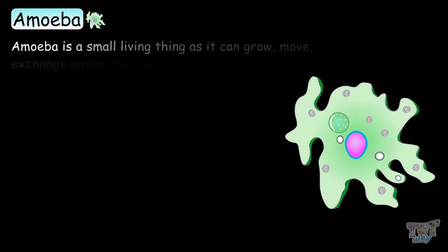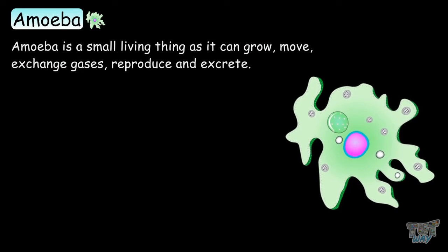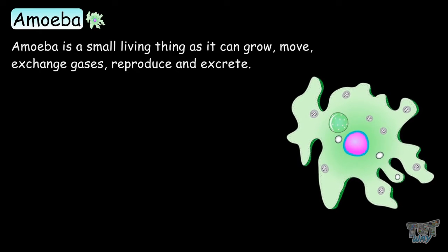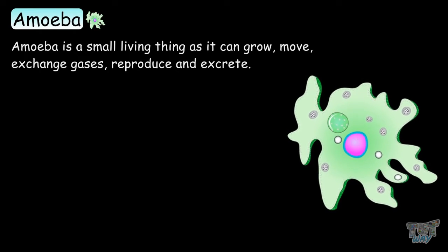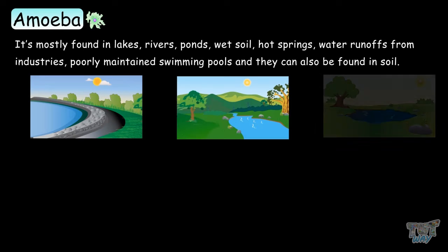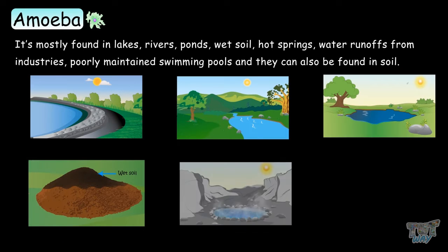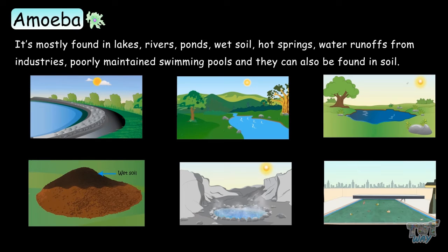The amoeba is a living thing as it can grow, move, exchange gases, reproduce, and excrete waste. It is mostly found in lakes, rivers, ponds, wet soil, hot springs, water runoff from industries, poorly maintained swimming pools, and they can also be found in soil.